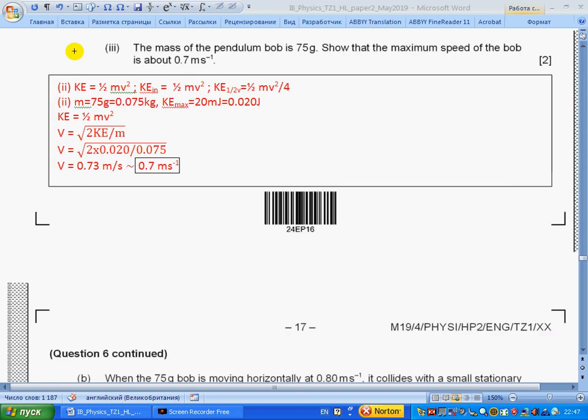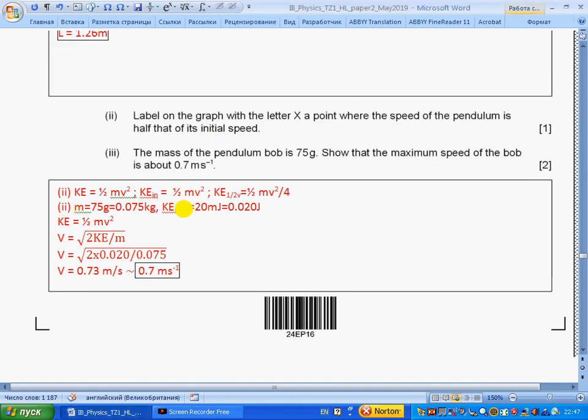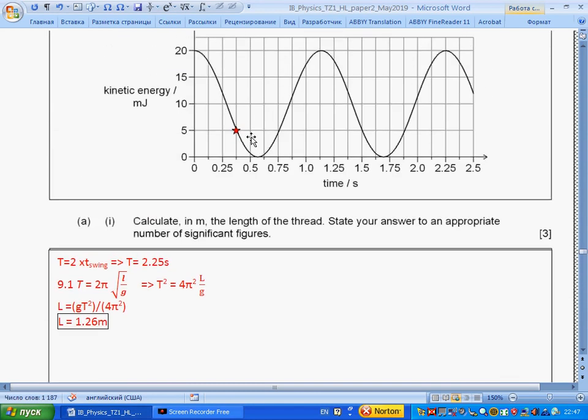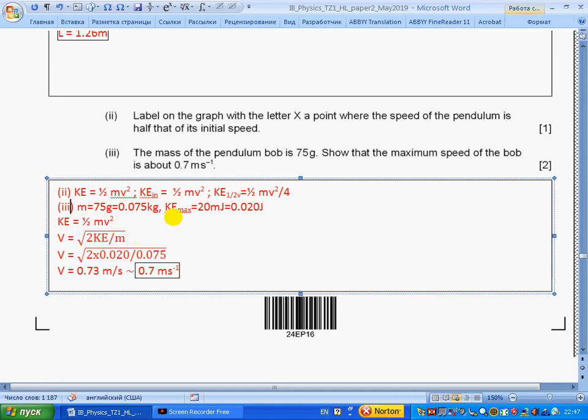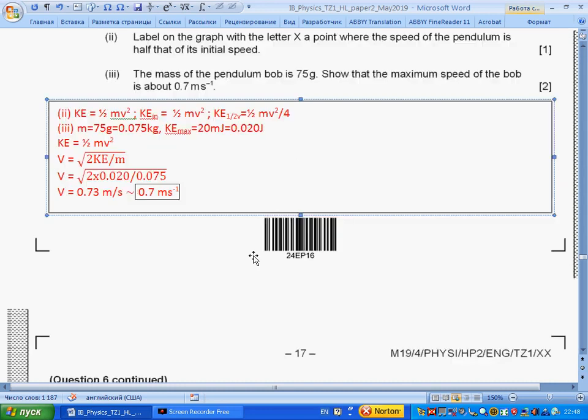Part iii: The mass of the pendulum bob is 75 grams. Show the maximum speed of the bob is about 0.7 meters per second. Kinetic energy is half mv². Kinetic energy is 20 millijoules initially. For half velocity, it is mv²/4, which is a quarter. So for part ii, a quarter—this is how we marked it. Now part iii: mass is given, kinetic energy maximum is given. So velocity from kinetic energy: half mv². We square root both sides and rewrite, and we get the formula. Substitute values and we get about 0.7 meters per second.